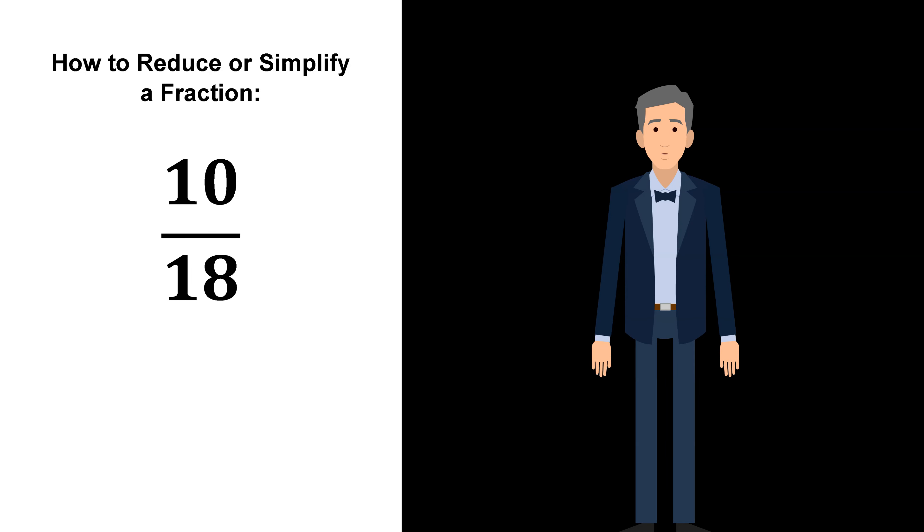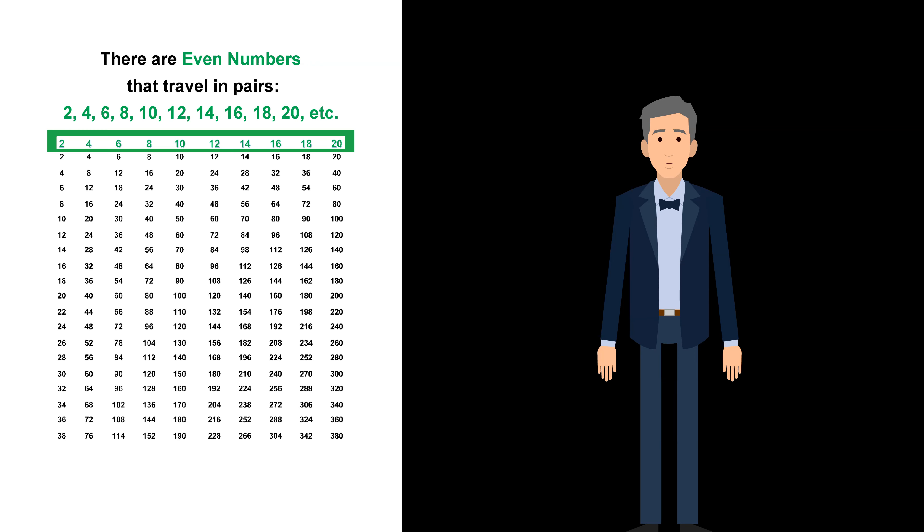How to reduce or simplify a fraction: 10 18ths. There are even numbers that travel in pairs: 2, 4, 6, 8, 10, 12, 14, 16, 18, 20, and so on.